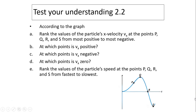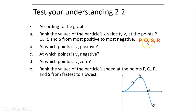Check your understanding 2.2: according to the graph, rank the particle's X-velocity Vx at points P, Q, R, and S from most positive to most negative. Most positive is P. Q has a slope of zero, same as S, so Q equals S. R is the most negative. So the ranking is P, then Q equals S, then R. Vx is positive at P, negative at R, and zero at Q and S because the slope is zero there.